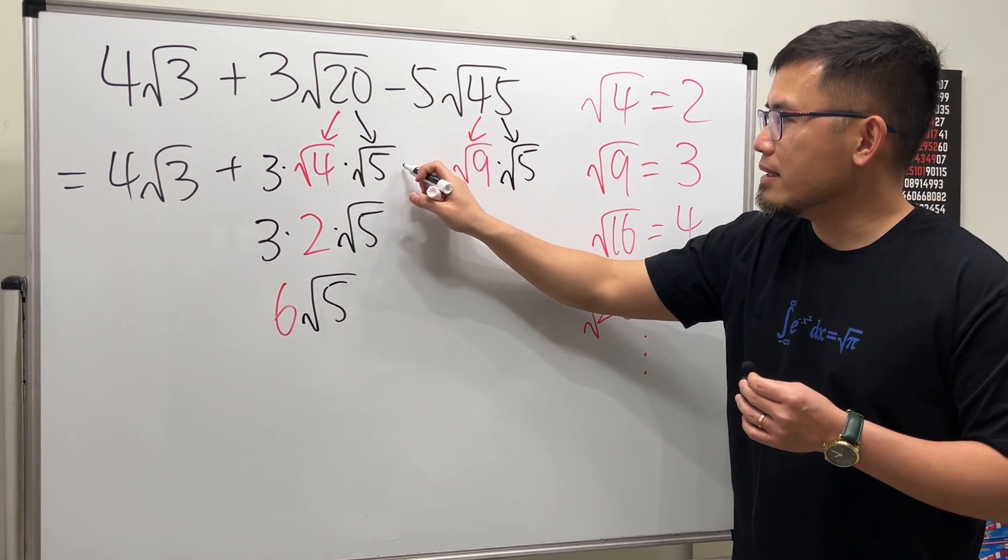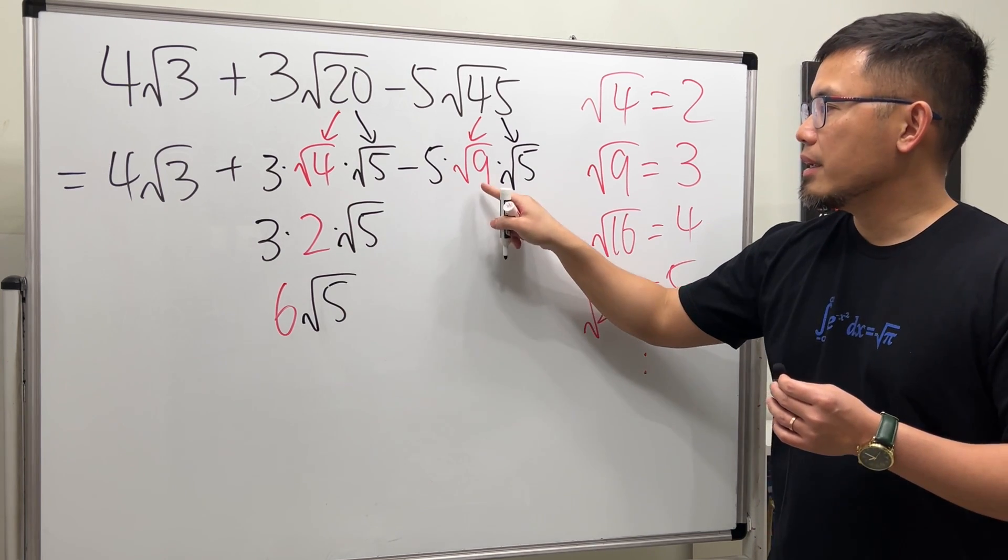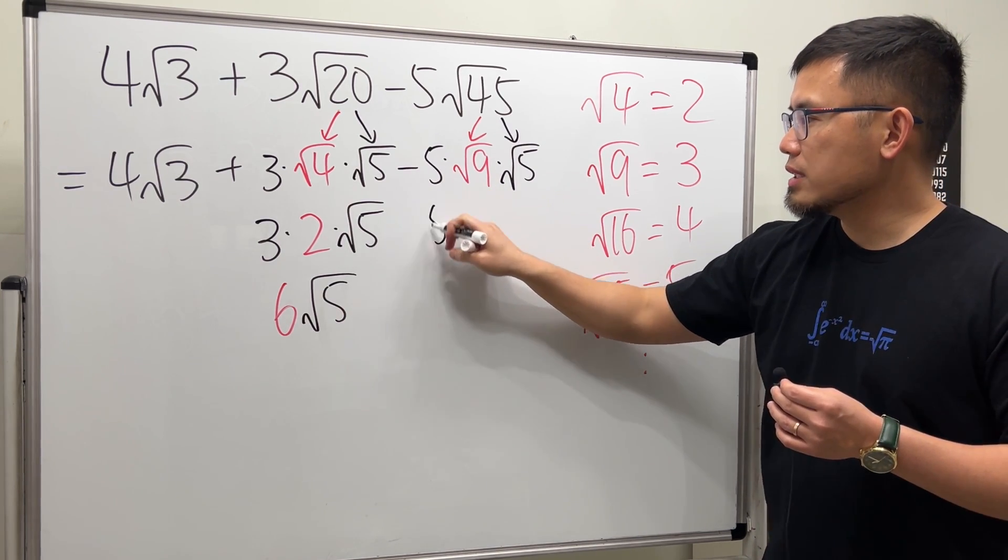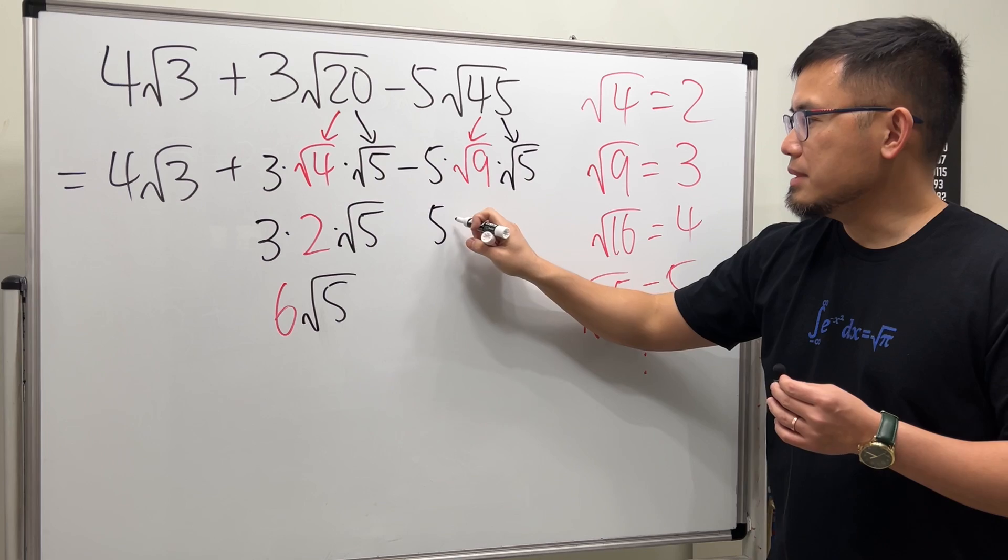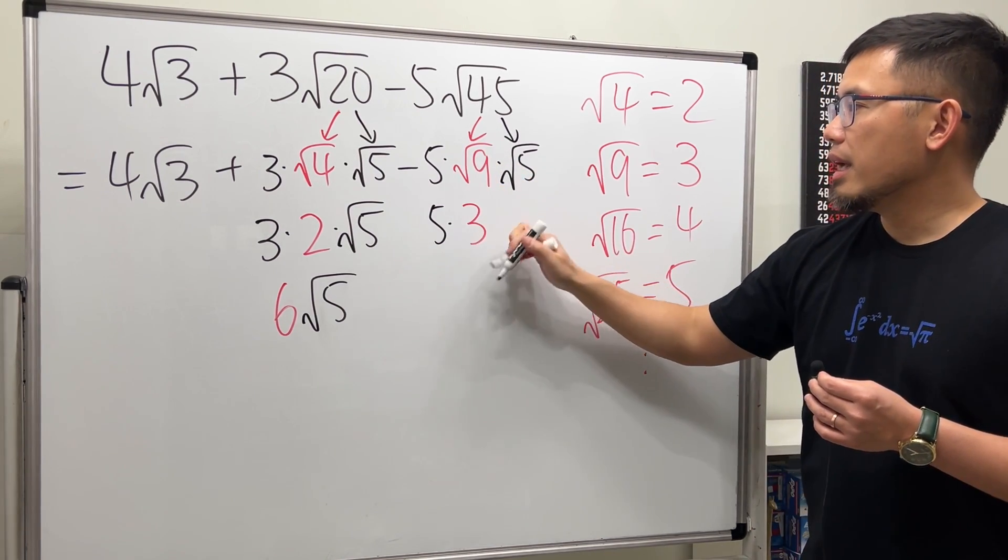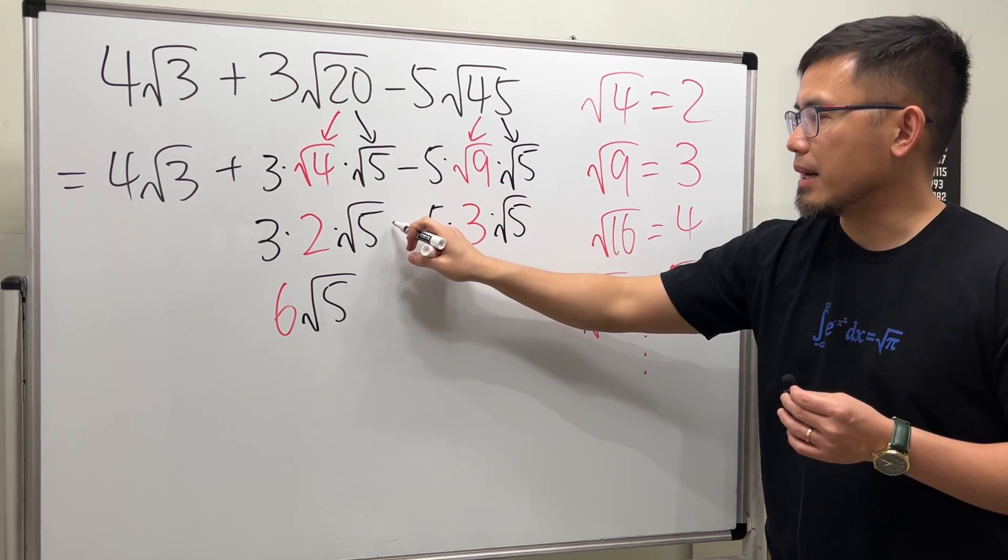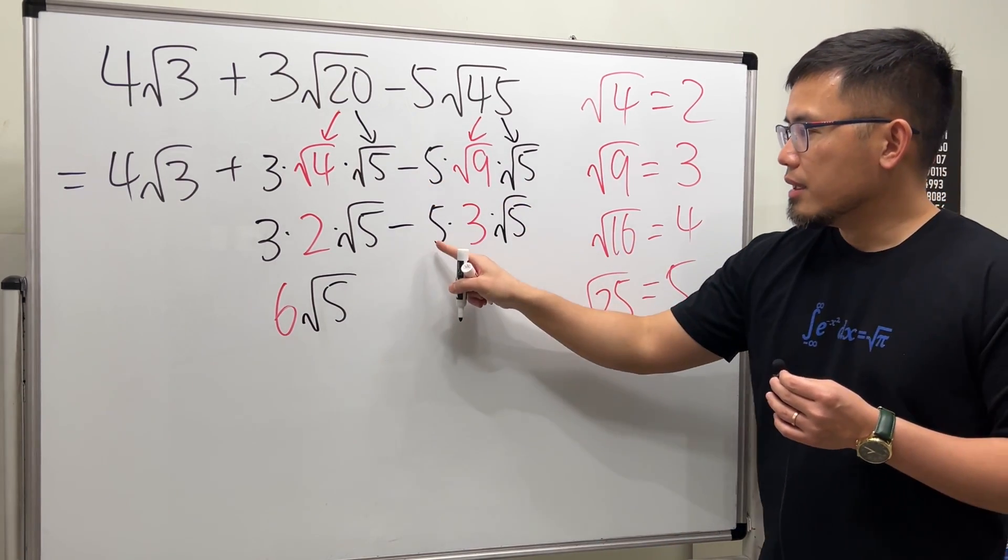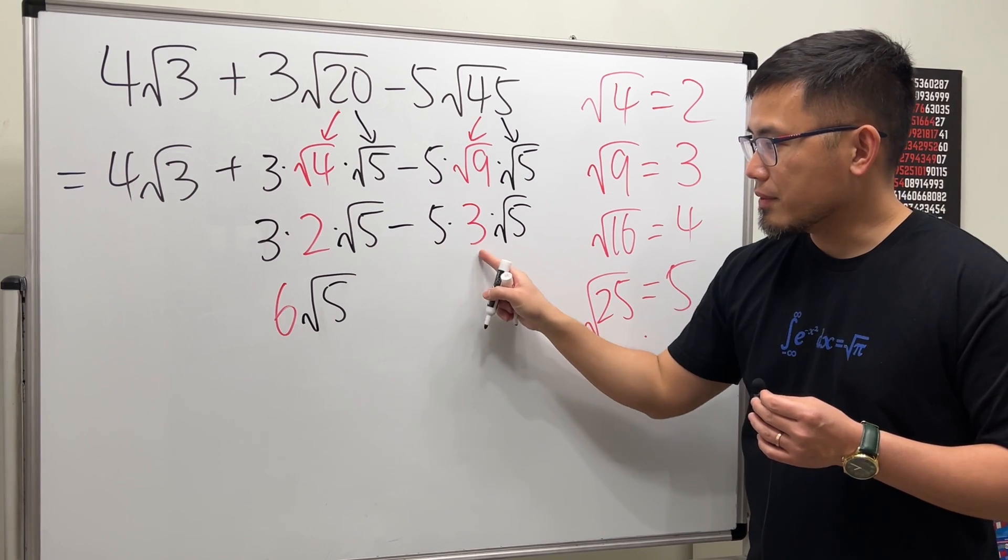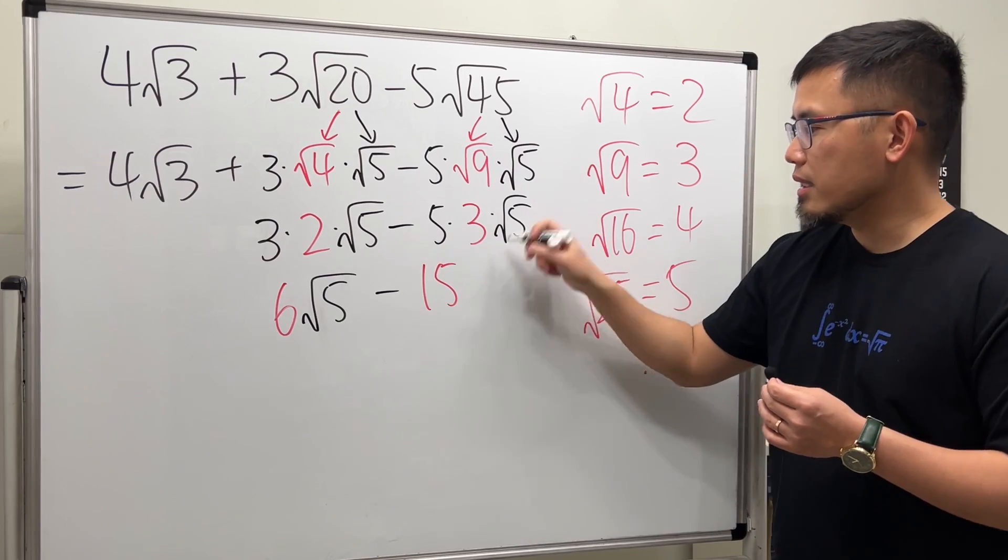Right here we still have the minus and then the 5, and they are multiplying. Now let me break down this. Times √9 is just a regular 3, and then times √5. And then that's a minus. So 3 times 5. Now 3 times 5 right here is 15.